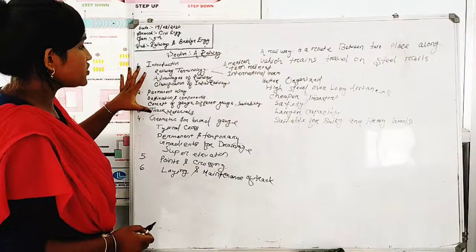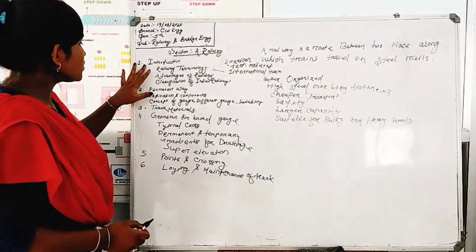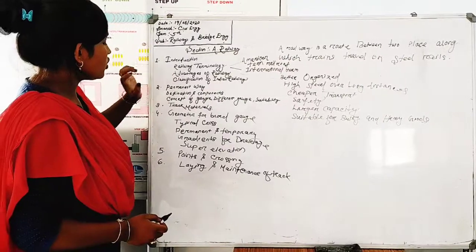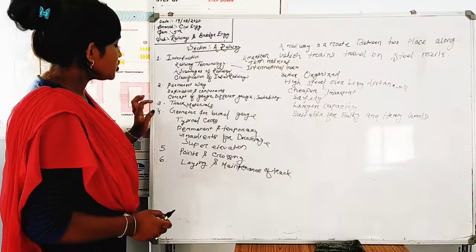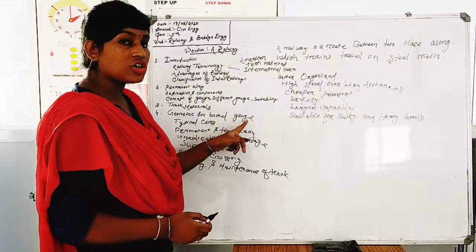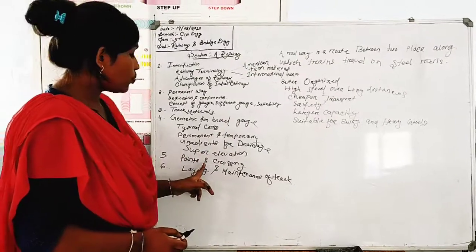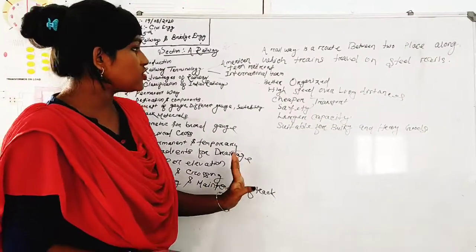We are going to discuss the syllabus. The first chapter is introduction. The second chapter is formation. The third chapter is track material. The fourth chapter is geometry for branch. The fifth chapter is point and crossing. The sixth chapter is laying and maintenance of track.